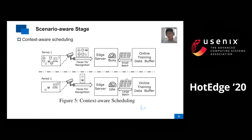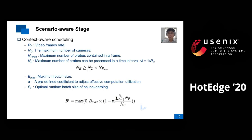This is the illustration of context-aware scheduling. We dynamically adjust the online learning batch size according to the edge server load in different contexts and different periods. Due to time constraints, the details of the context-aware scheduling policy will not be explained here.